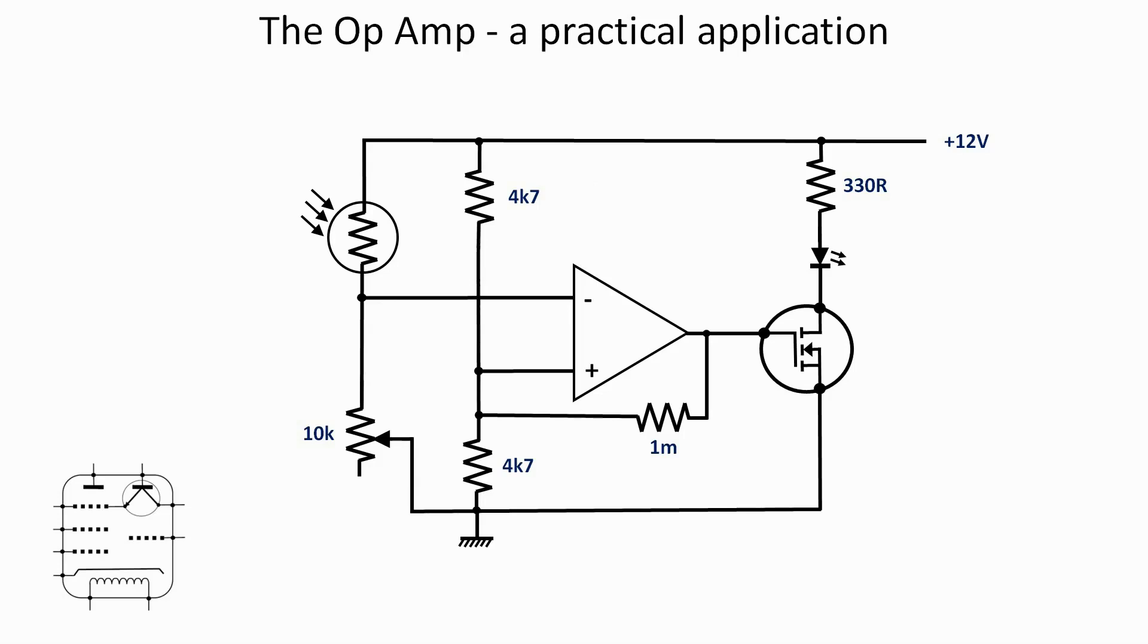The comparison process that's going on between the two inputs is identical to the example we've just seen. The output, however, now is connected to the gate of an N-channel MOSFET, and I've included between the drain and the source of that MOSFET an LED and a current limiting resistor. I've just done that so you can see a visual example of the effect.